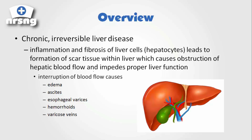So what is cirrhosis? Cirrhosis is basically a chronic and irreversible liver disease. It is irreversible. What happens with cirrhosis is our liver starts to become inflamed and we start to get fibrosis of the liver cells. This leads to scar tissue within the liver, and this scar tissue causes obstruction of hepatic flow — all the scar tissue starts to obstruct normal blood flow within our liver, which also begins to impede normal liver function.